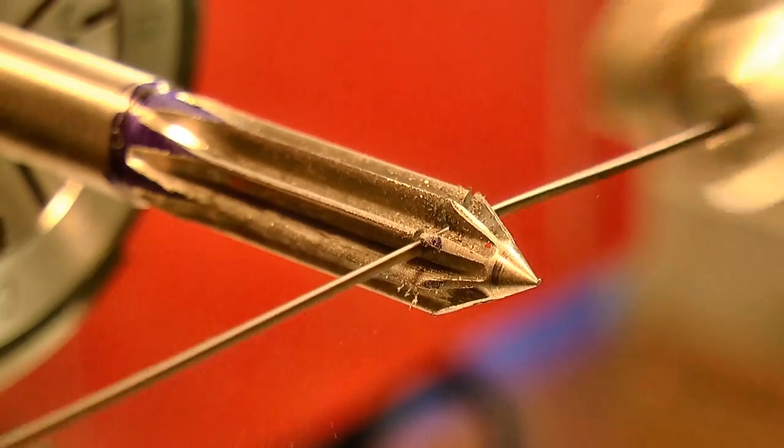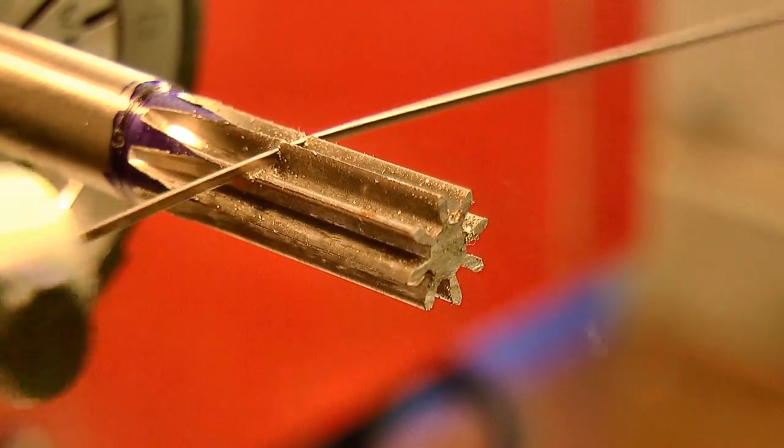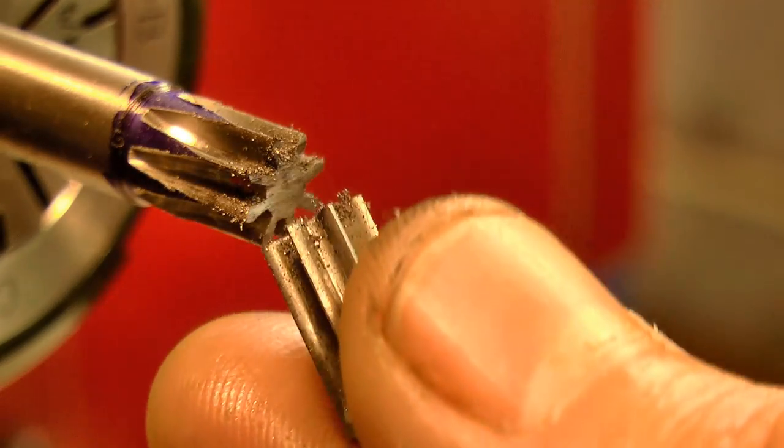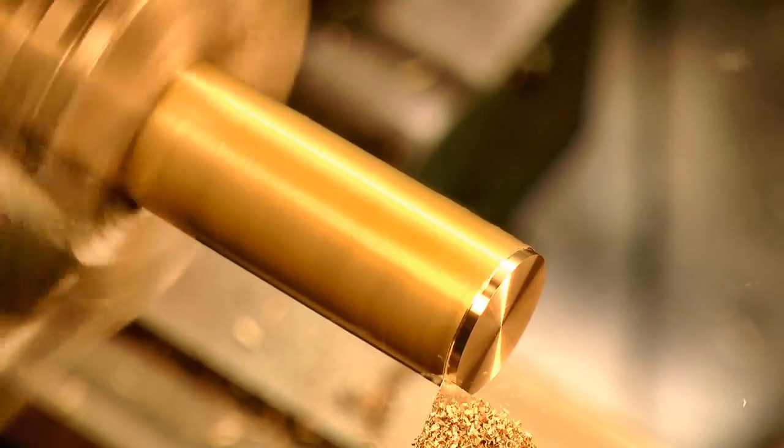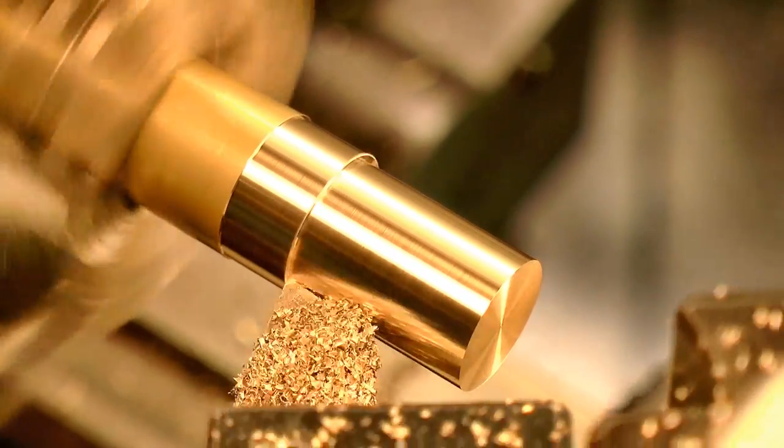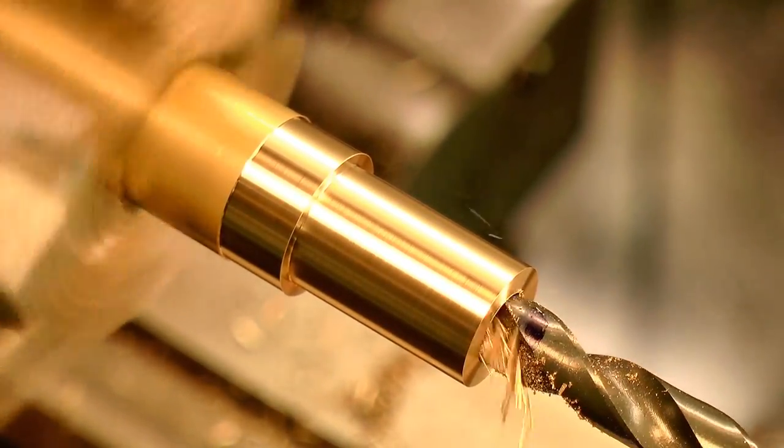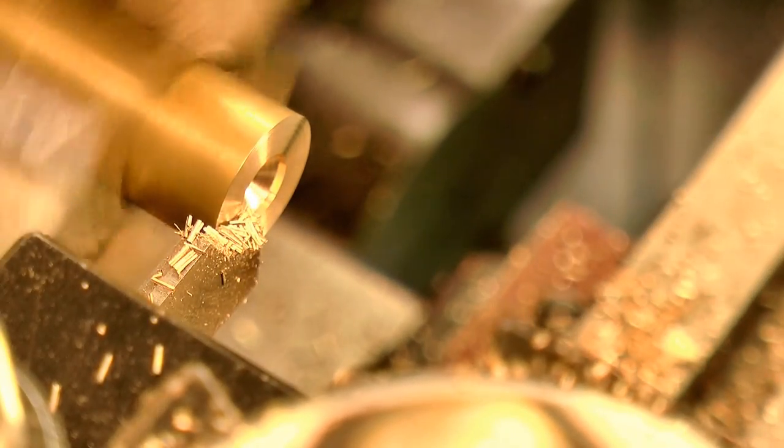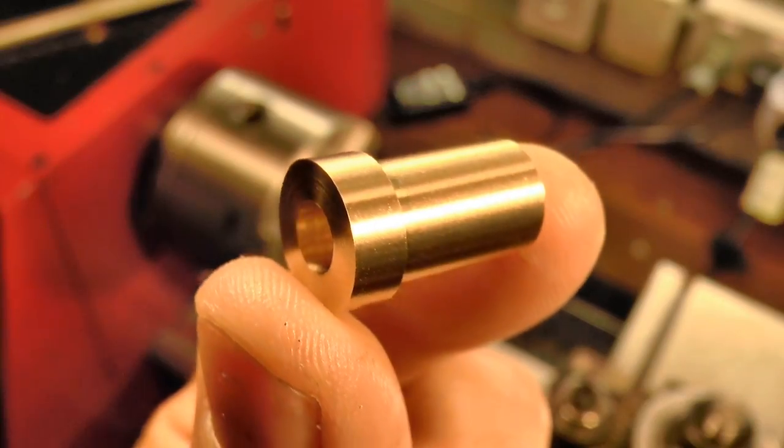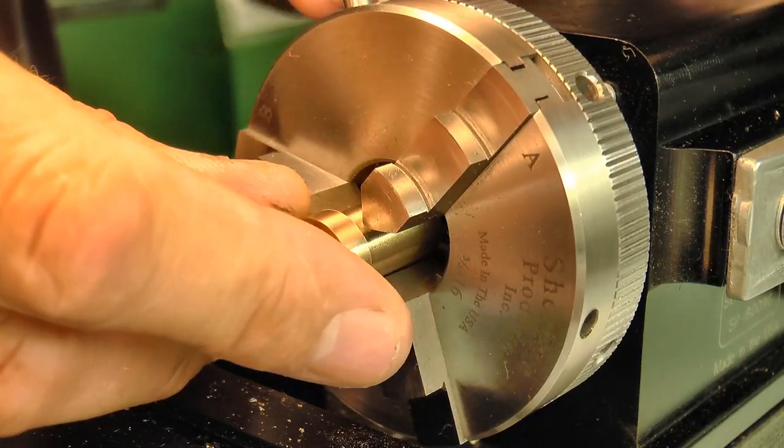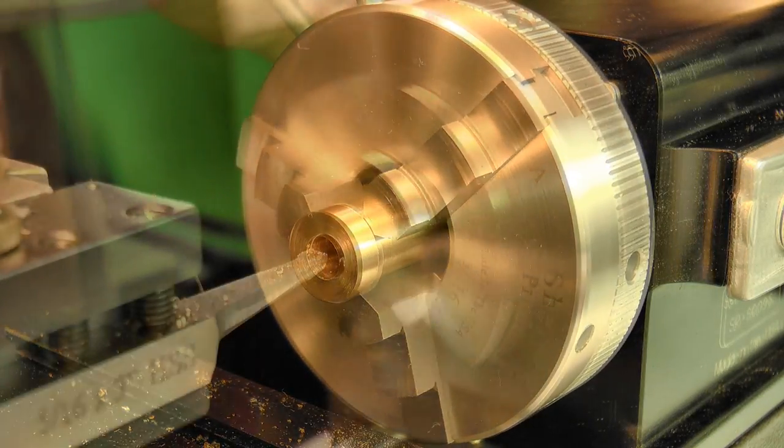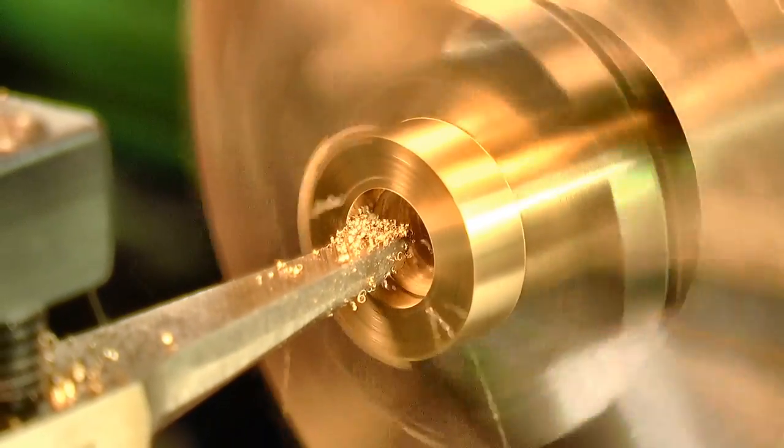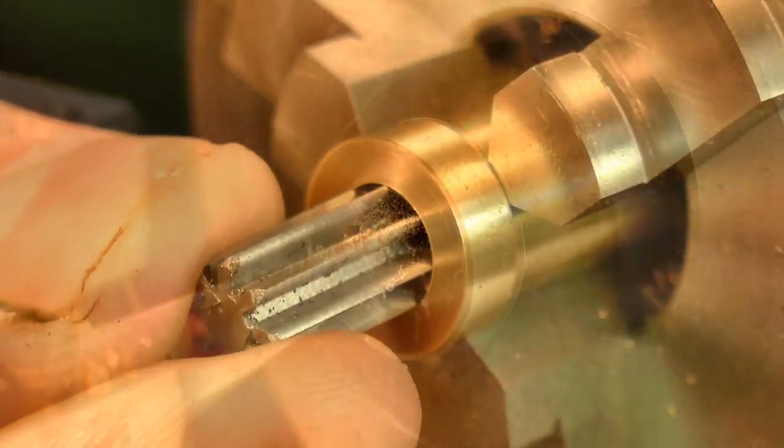Okay, with the profile cut, the blank needs to be drilled out. So now I need a new way to hold it. And a temporary pot chuck does the trick. They can be quickly turned up to suit the job, and then bored out to take the pinion. I'm aiming here for an easy press fit with the pinion.